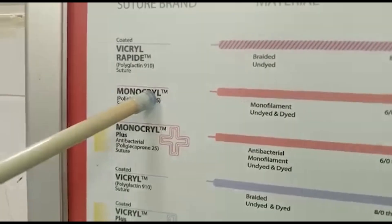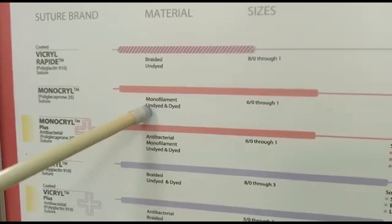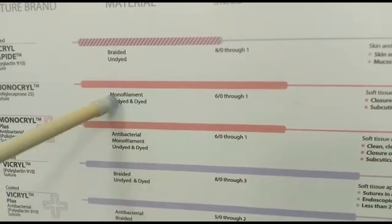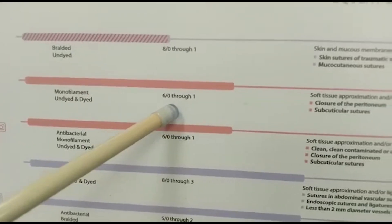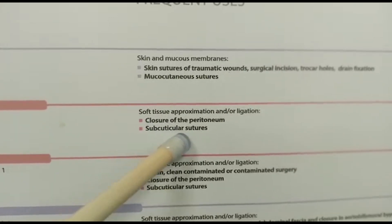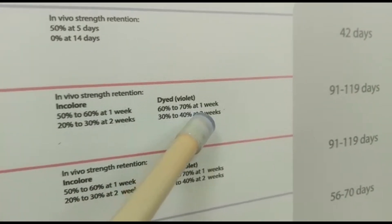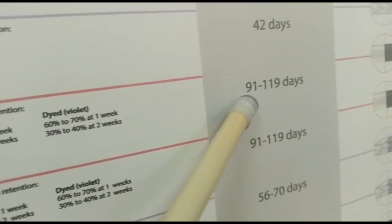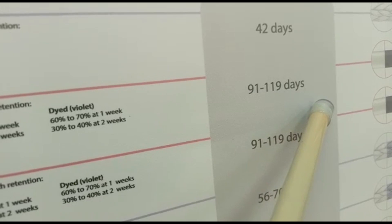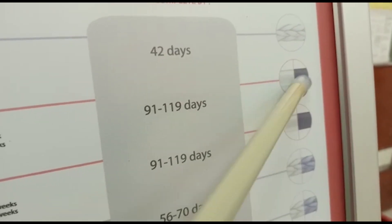We also have Monocryl, which is also an absorbable suture. They come in dyed and undyed varieties — dyed ones are colored and undyed have no color. They come in different sizes from 6-0 through 1 and are used for closure of the peritoneum and subcutaneous sutures. These sutures hold tissues for up to 70 days, and complete absorption in the body takes 91 to 119 days. Clear Monocryl is undyed; dyed Monocryl is blue in color.